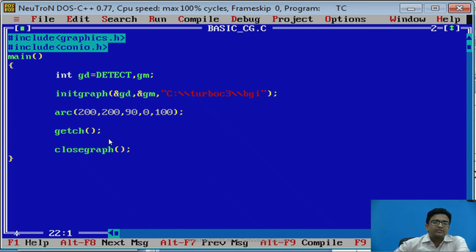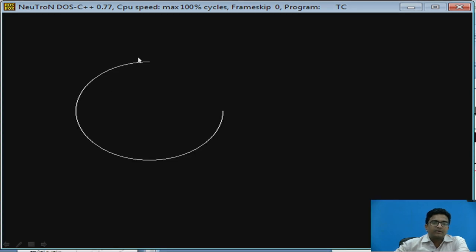The program based on arc. In the program, the center point is 200, 200, starting angle is 90, end angle is 0, with the radius 100. So this will draw the arc.